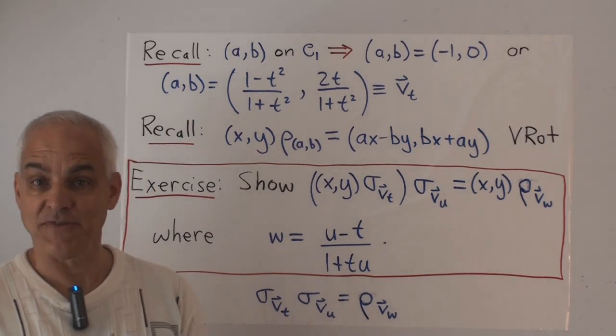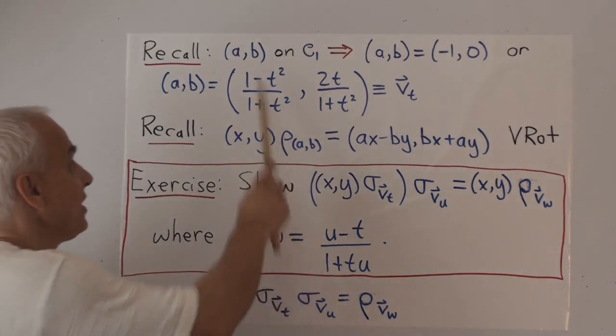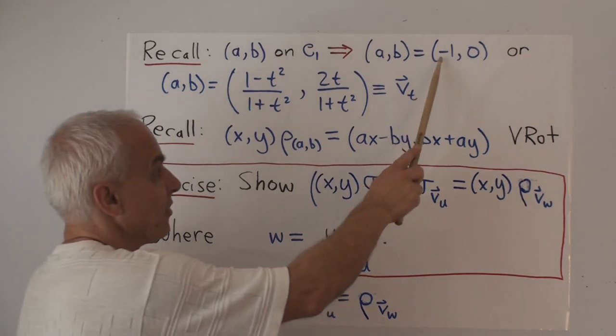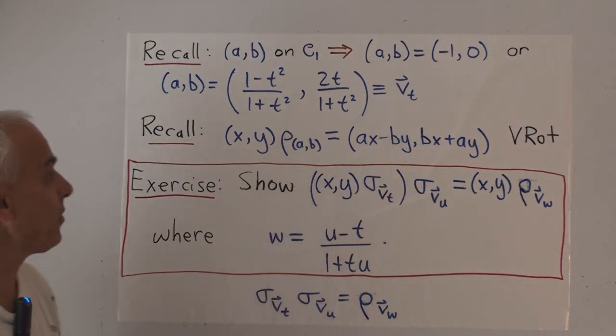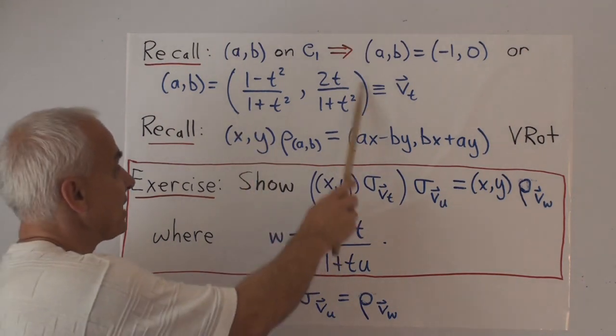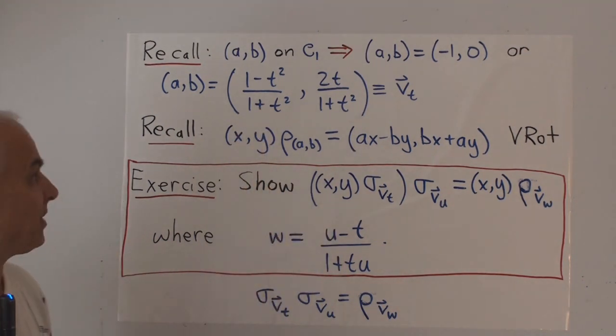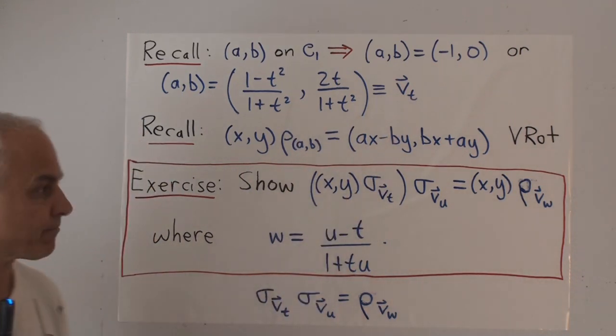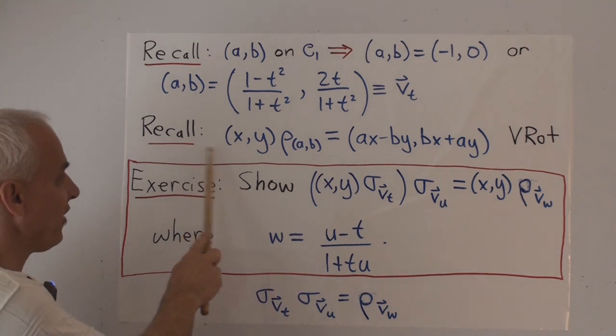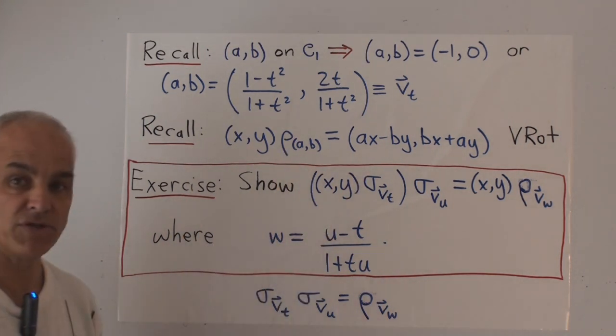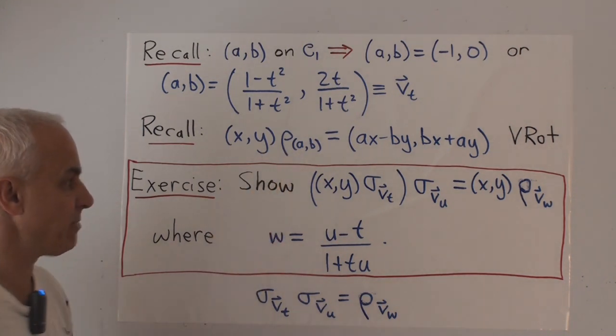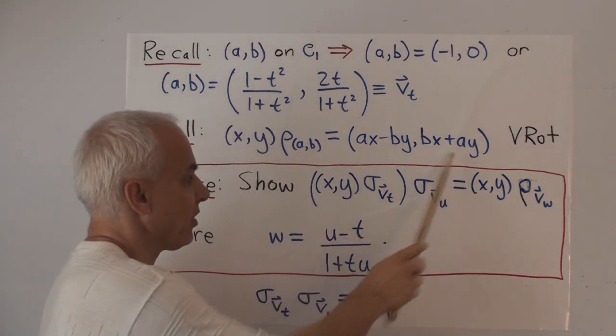Now, just as in our previous video, I remind you that if a vector AB lies on the unit circle, then it's either the special vector minus 1,0, or it has this expression in terms of a parameter T. And we call this vector V sub T. And I also remind you that in the previous video we established this formula for a rotation. x,y followed by the rotation indexed by AB was this particular combination.